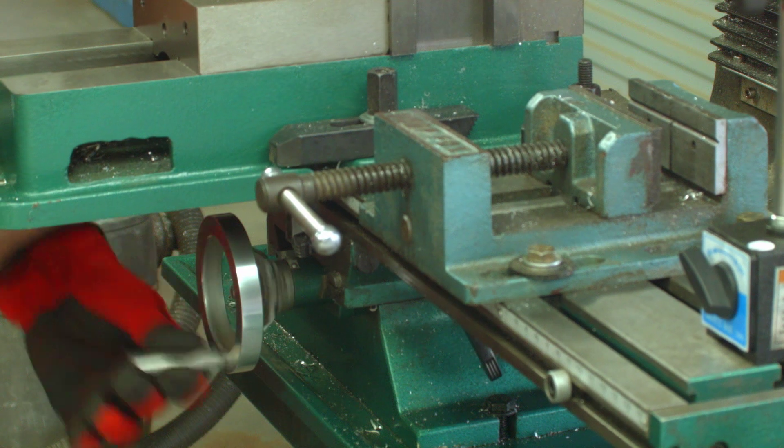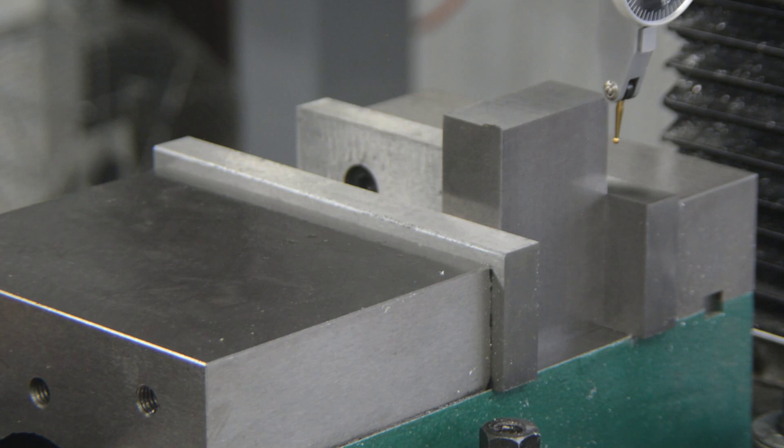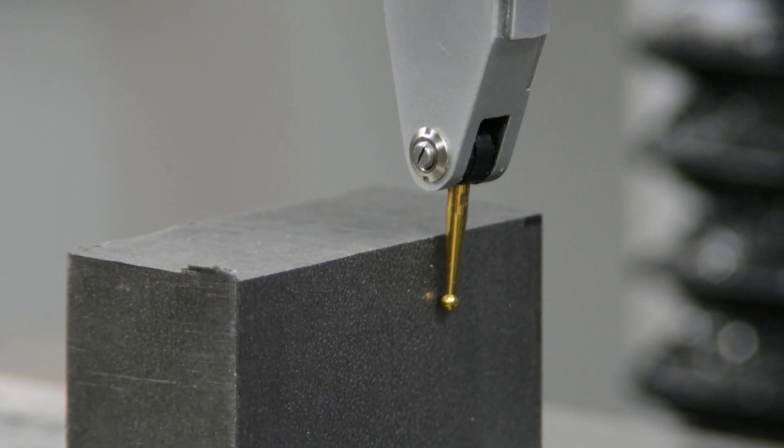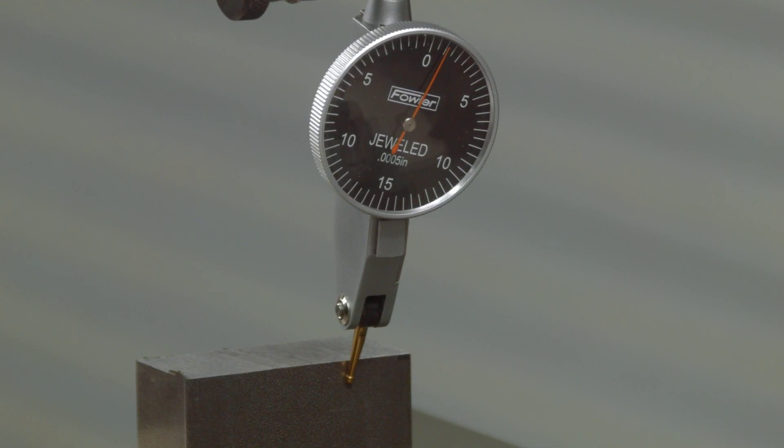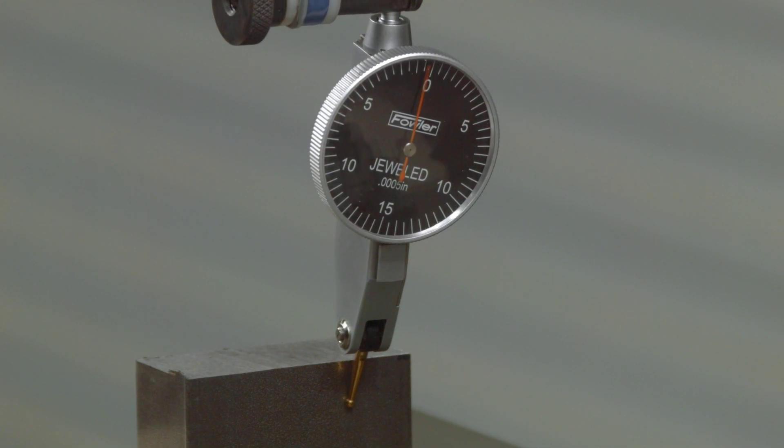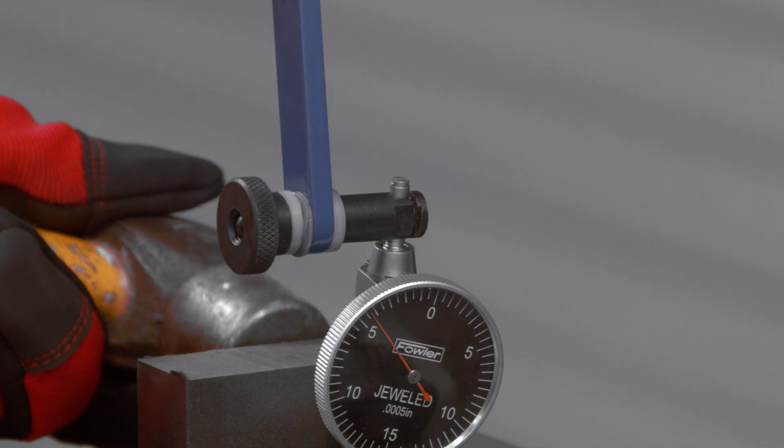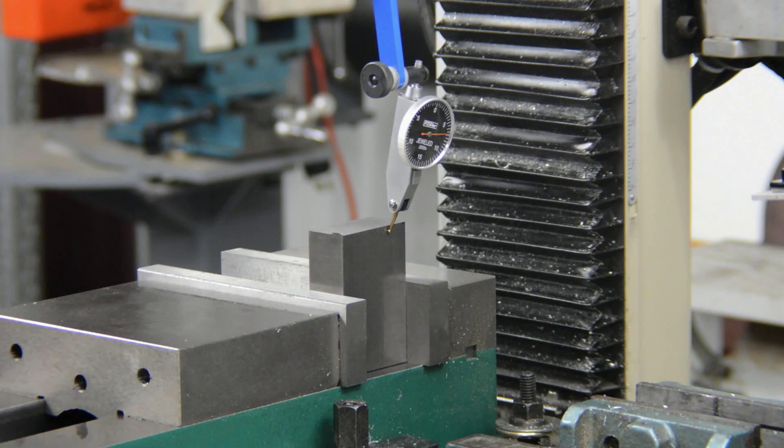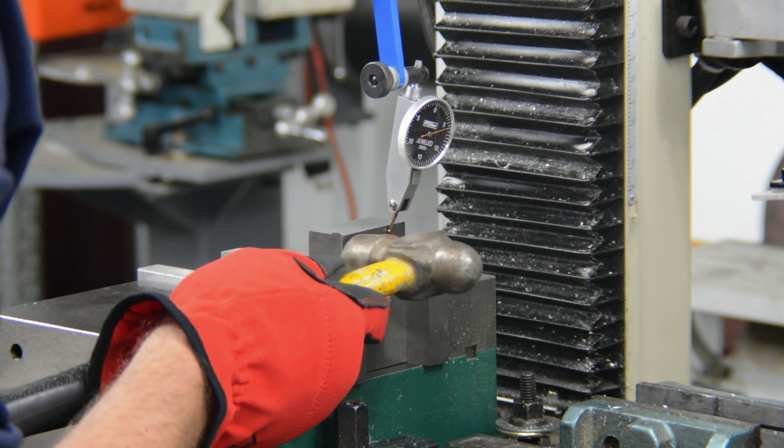Bring your part up to the indicator slowly. You don't want to crash and risk damaging anything. When the indicator touches the part slow down to accurately position the needle on the zero mark. Move the Z axis up and down and watch the needle move. Tap the part as needed to get the needle back on zero. I should mention that zero is not mandatory and any number on the dial face will do. The goal is to get the needle to stay on the number as the Z axis moves. Then you will know the part is straight up and down.